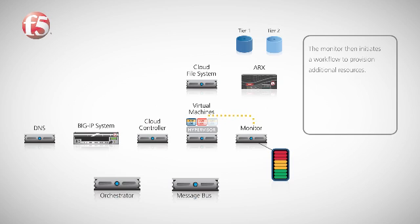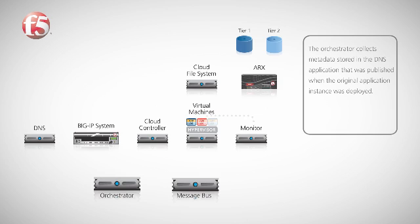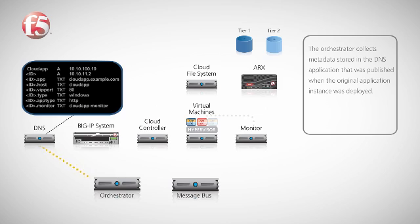In response to the dwindling resources, the monitor publishes an event notification to the message bus. This notification initiates an automated workflow to provision additional application resources. In order to deploy the application, the orchestrator collects the required application configuration metadata. This may include the name of the application, application type, and port information.